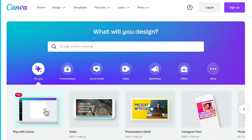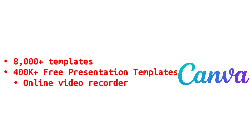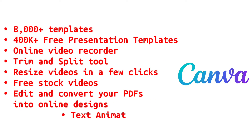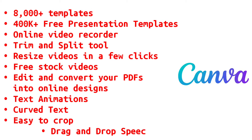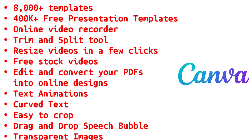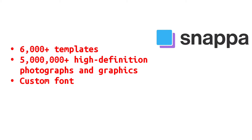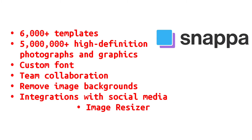For the Canva features, we have 8,000-plus templates, 400k-plus free presentation templates, online video recorder, trim and split tool, resize videos in a few clicks, free stock videos, edit and convert your PDF into online designs, text animations, curved text, easy crop, drag and drop, speech bubble, and transparent images.